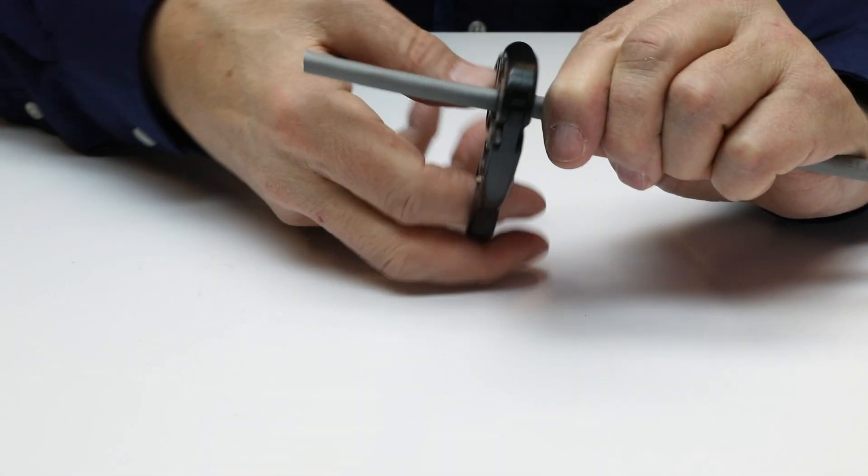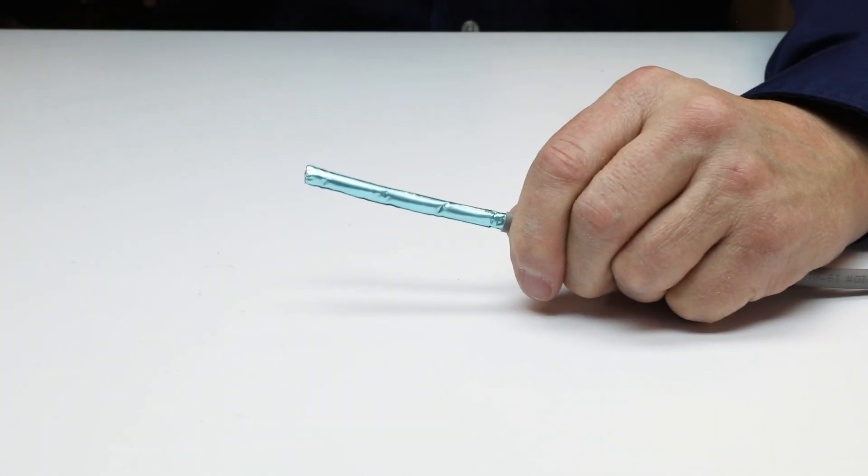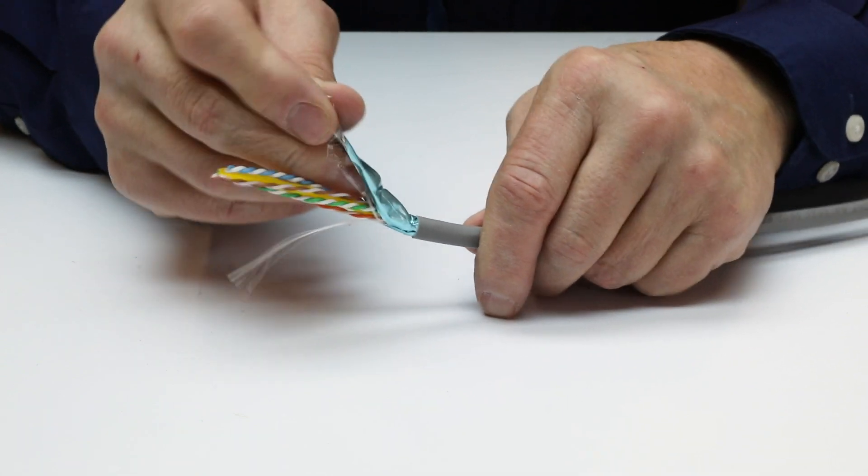To start, strip the cable taking care not to nick the foil, the drain wire, or the pair insulation.